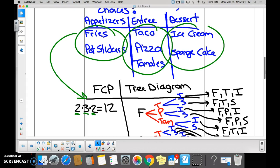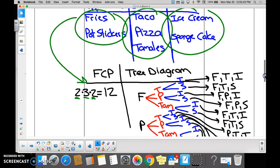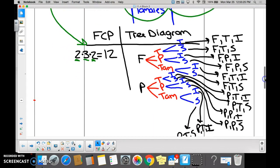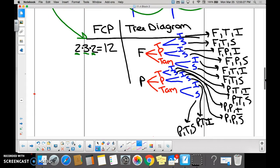So you said easy, I'll make a tree diagram. On my tree diagram I'll start off with my appetizers: fries and potstickers. Then if I have fries as my appetizer, I could offer tacos, pizza, or tamales. With potstickers I could have tacos, pizza, or tamales. So here's my first set of events, here's my second set of events.